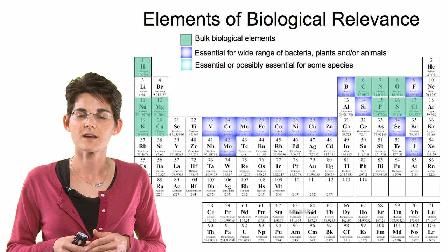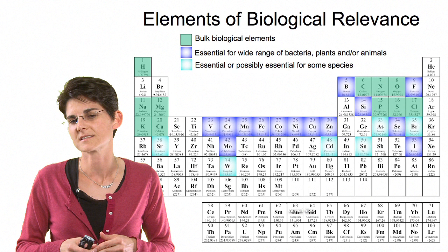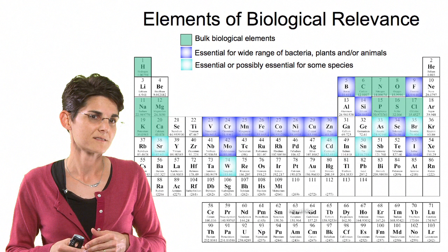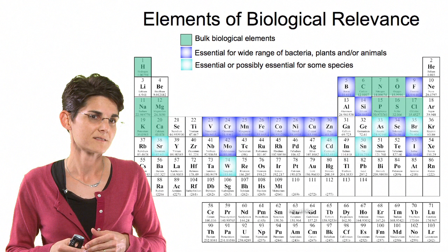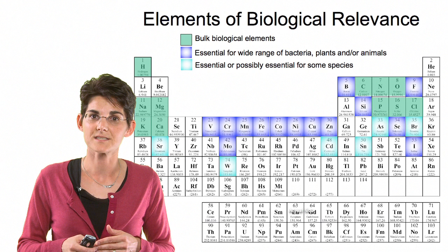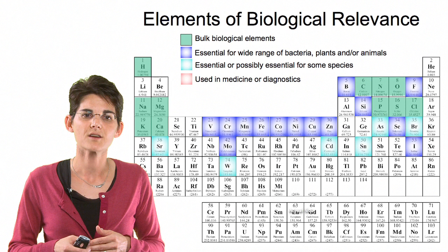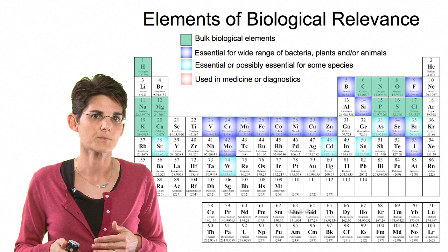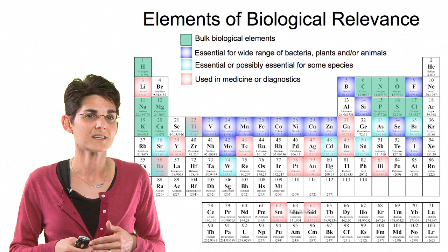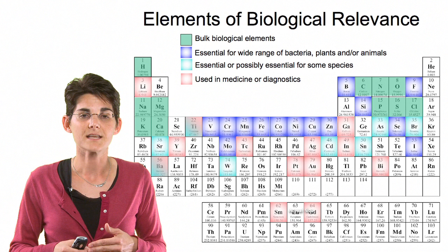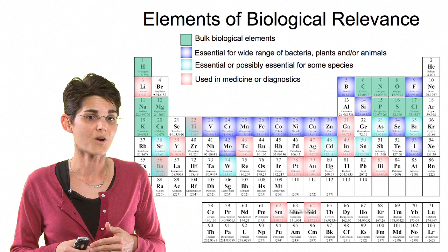Then there are elements that are essential or may be essential for some species but not necessarily all — some are still somewhat controversial. They might be essential for certain bacteria that live in ocean vents, but not for all organisms. There's also a set that inorganic chemists work with in medicine or diagnostics, but which aren't necessarily naturally occurring — and this list is growing. Chemists can be quite creative. One famous example is platinum, used in the widely used anti-cancer agent cisplatin, but there are many others on their way.